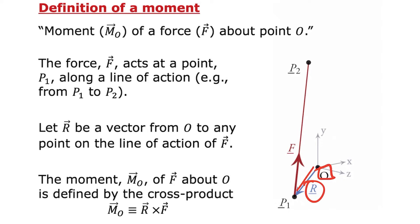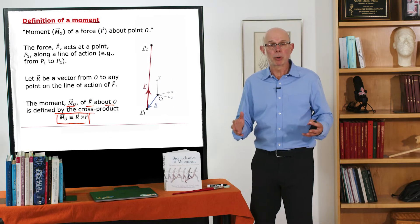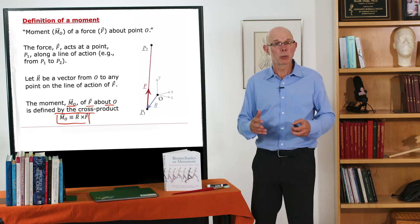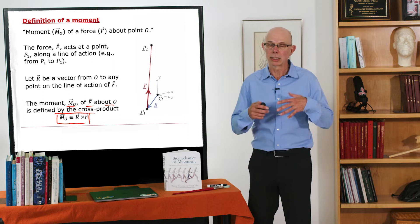Given those basic ingredients, we can define a moment, which is a cross product. The moment M of F about O is defined by this cross product here, so just R cross F. This is a vector operation. I'm going to assume that you're familiar with doing cross products. If not, it's easy to look it up.